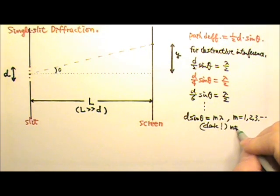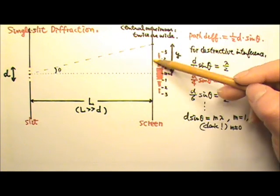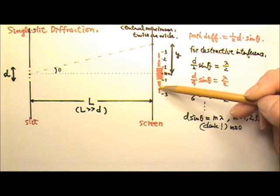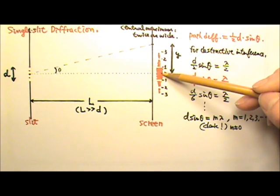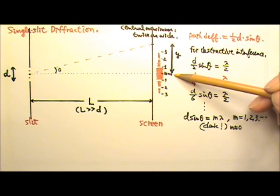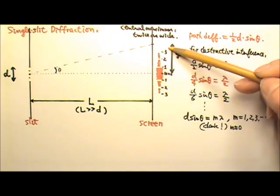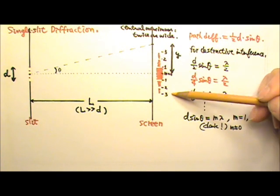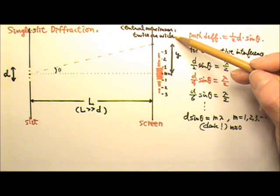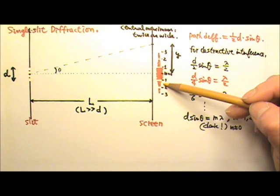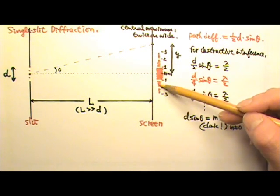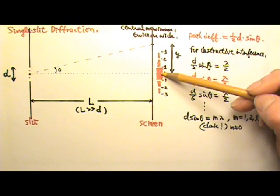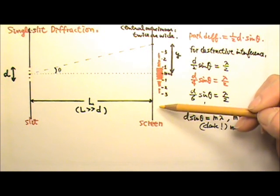The m equals zero case will be a bright fringe, not a dark one. Looking at the pattern on the screen: the red spots are bright fringes. The center is m equals zero — a bright fringe — and m equals one, two, three are dark fringes. Since the distance between each m is about equal, the central maximum is twice as wide as the other bright fringes, and also much brighter, with brightness dropping rapidly as we move farther from the center.